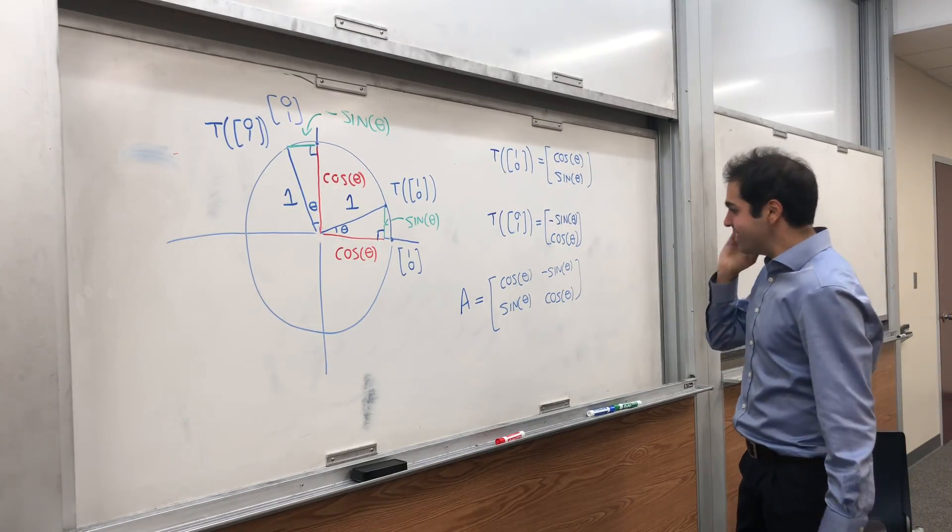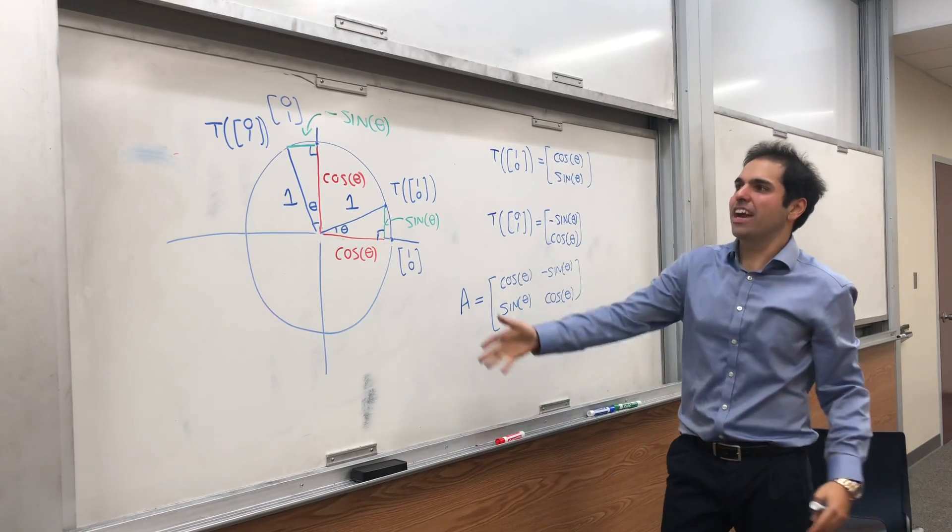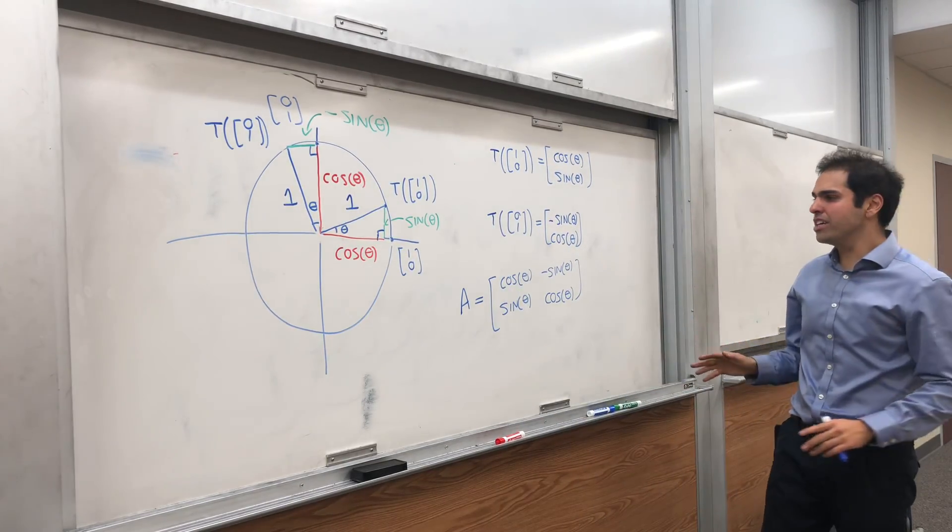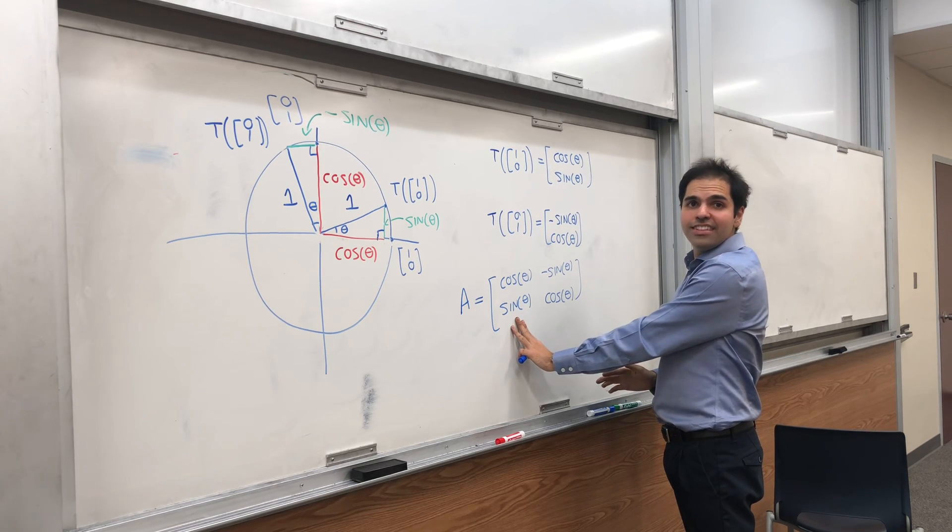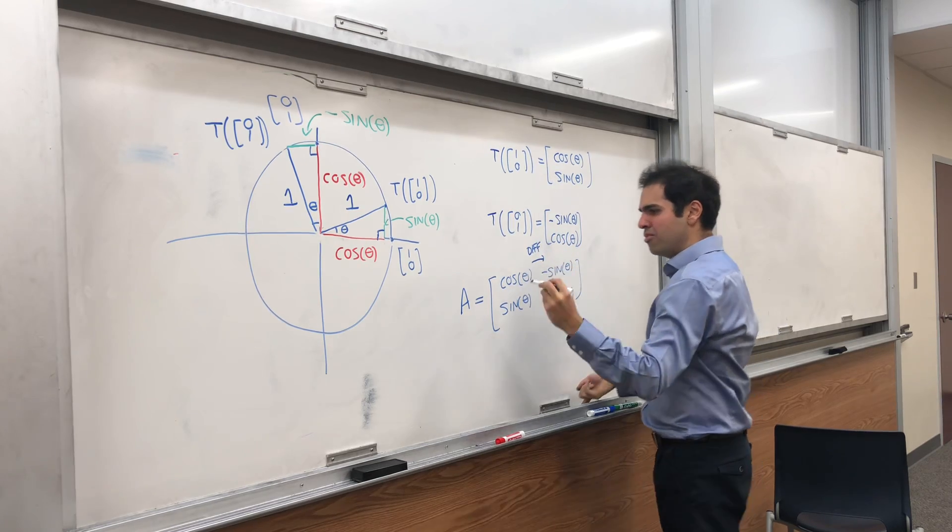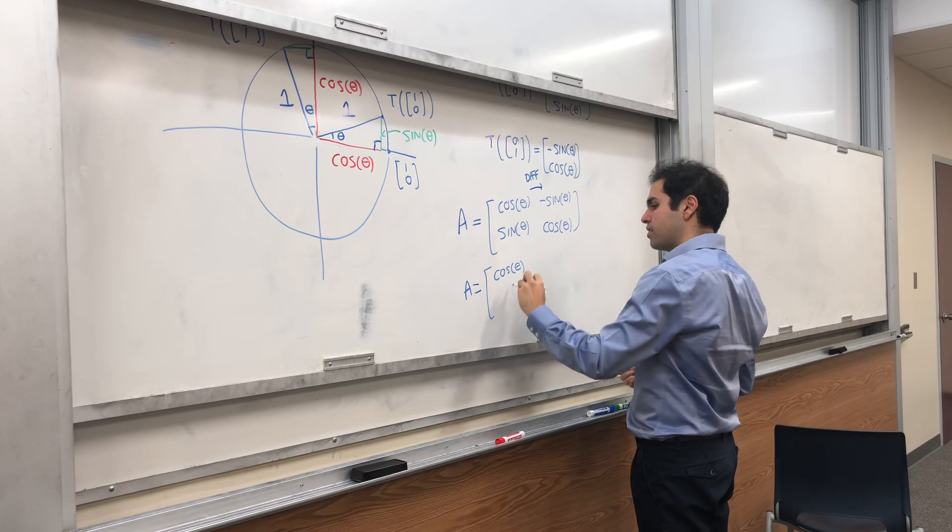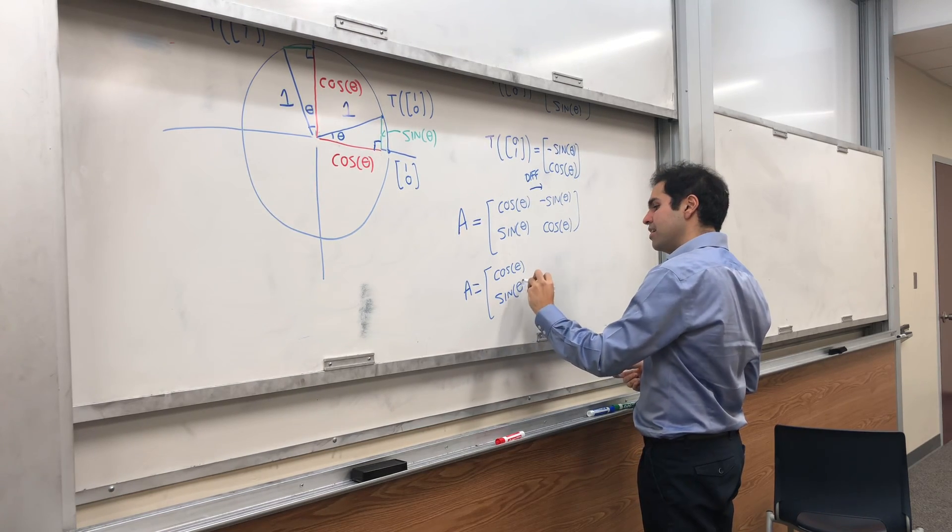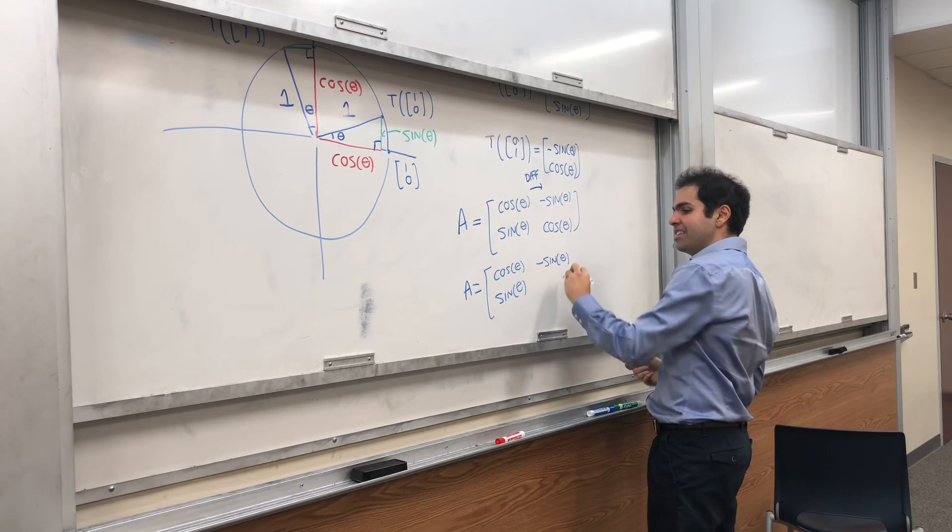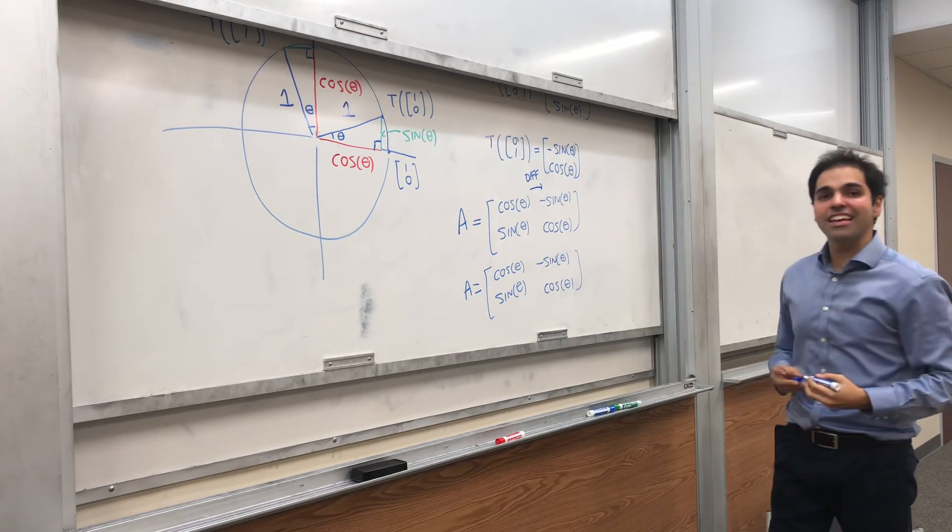Wonderful. And just a couple of remarks. How do you memorize this? Because, of course, on an exam, you can't just draw the circle and figure out what's going on. There's actually an easy way of doing this. You start with cosine and sine, and then you just differentiate. So suppose you want to find this. A is cosine theta, sine theta. To find the second column, you differentiate cosine to get minus sine, and you differentiate sine to get cosine.